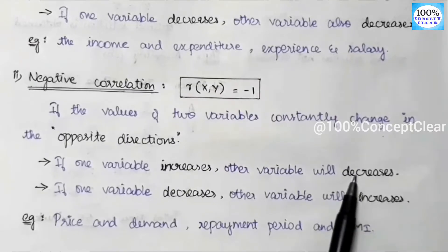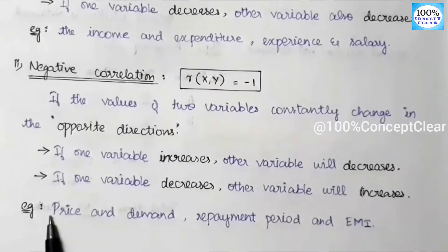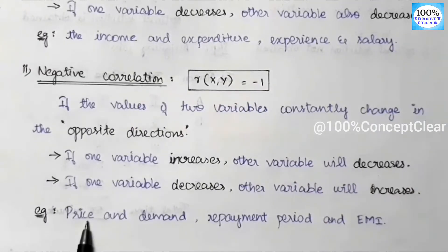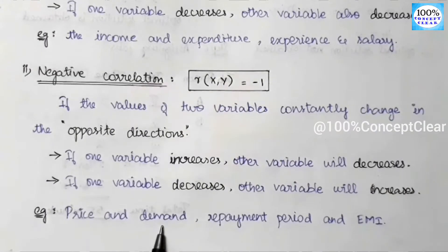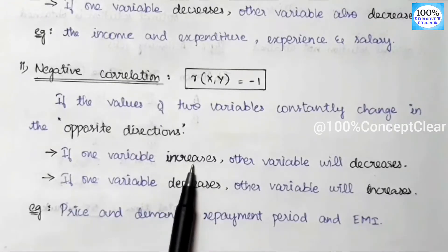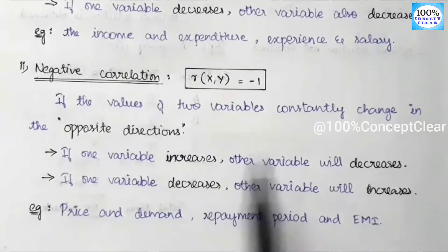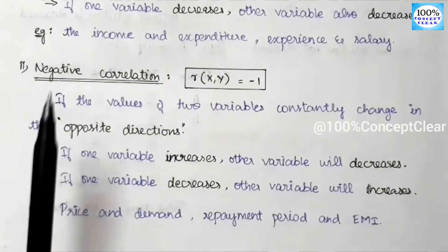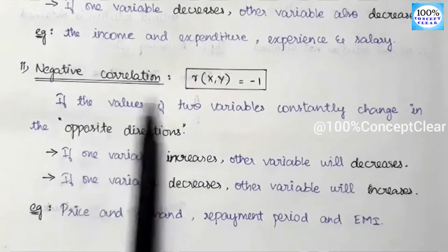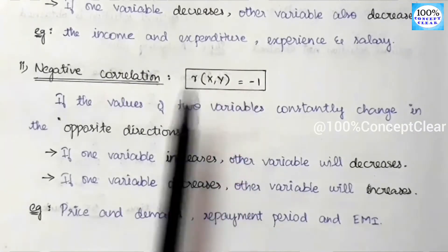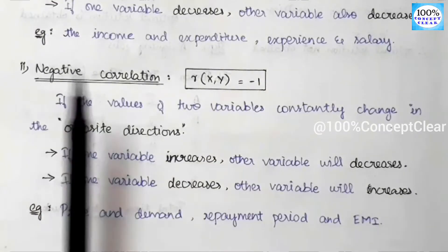In negative correlation, we use opposite directions — increase and decrease. Here is an example: price and demand. If price increases, demand decreases. If there is a variable increase, the other is a decrease — this is the opposite direction. That is the negative correlation, so the correlation coefficient is minus 1, and the correlation is negatively correlated.